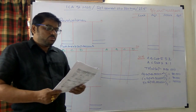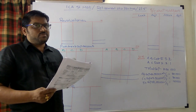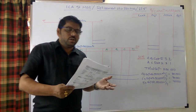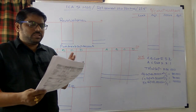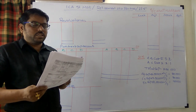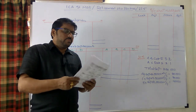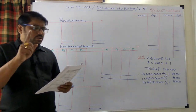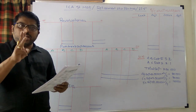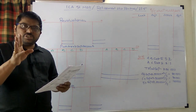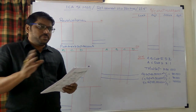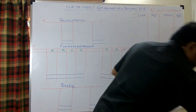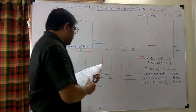The amount due to the retiring partner shall be transferred to his loan account after giving investments worth 15,000. In the books, investments are 12,000; we raise them to 15,000 through revaluation, recognizing 3,000 profit, and give the investment to the retiring partner. We require: revaluation account, partners' capital accounts, bank account, and balance sheet. This problem can be finished in about 15 minutes.